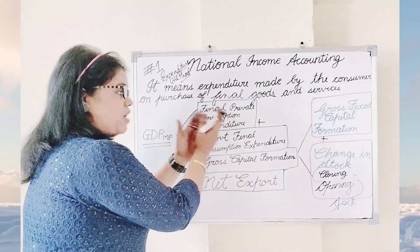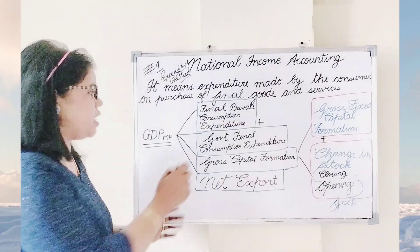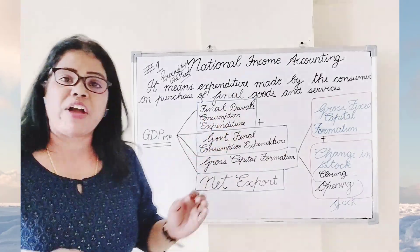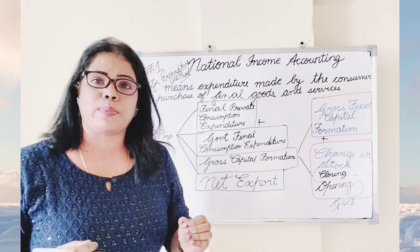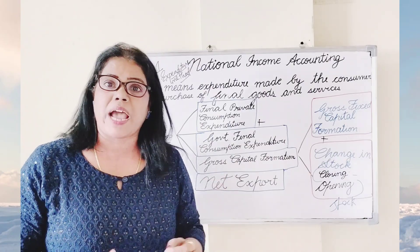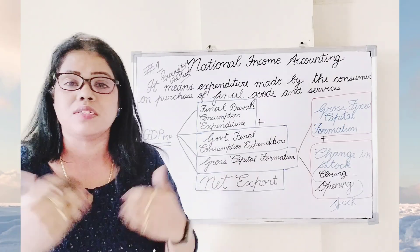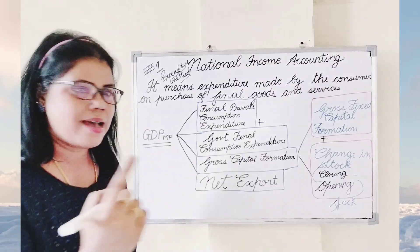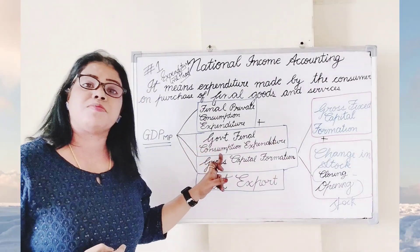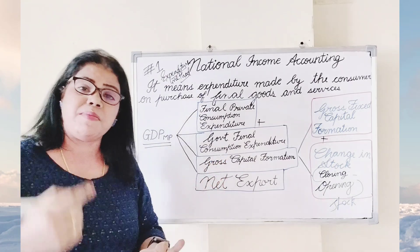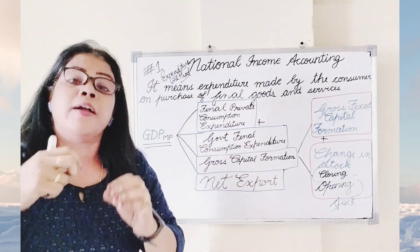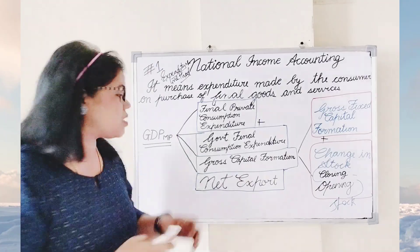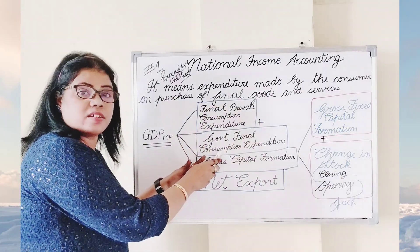First of all, private final consumption expenditure. What is private final consumption expenditure? When the household is buying final goods and services during an accounting year, it is called private final consumption expenditure. Plus, government final consumption expenditure: whenever the government is spending money for buying goods and services during an accounting year, it is called government final consumption expenditure.